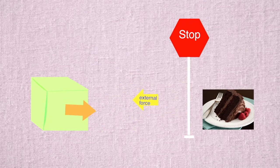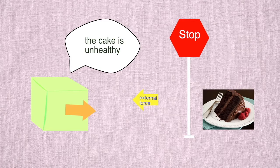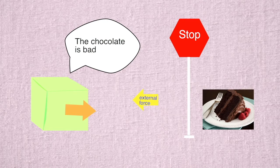How can the person refrain themselves from performing the desired action? In this case, people will have a greater tendency to derogate the action by persuading themselves that it is less desirable to them.